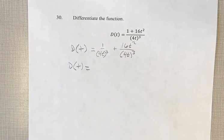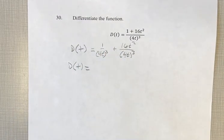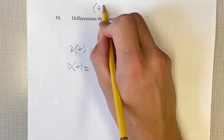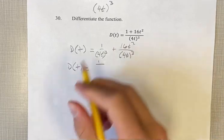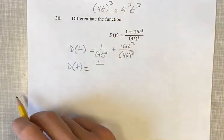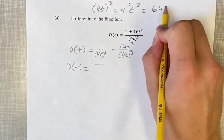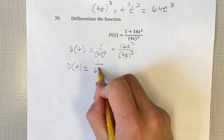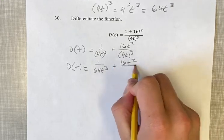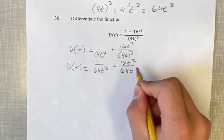Before we go with the derivative, we want to actually find out what 4t cubed is. This is just so we don't have to write it out twice. 4t cubed equals 4 cubed times t cubed, finding the cube of everything in there, equals 64t cubed. So we have 1 over 64t cubed plus 16t squared over 64t cubed.